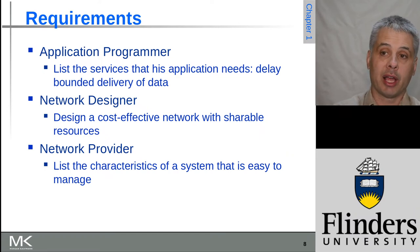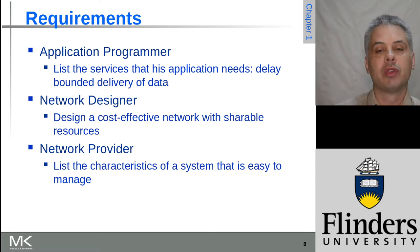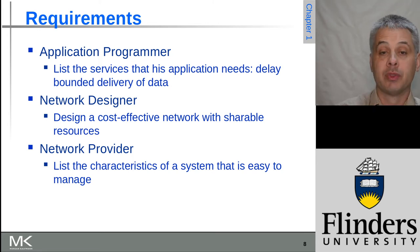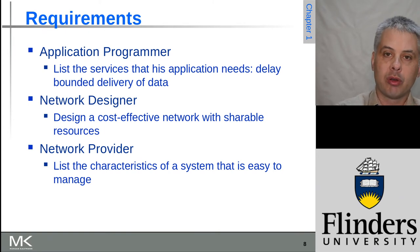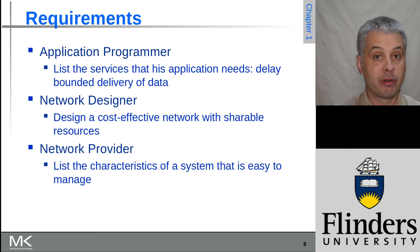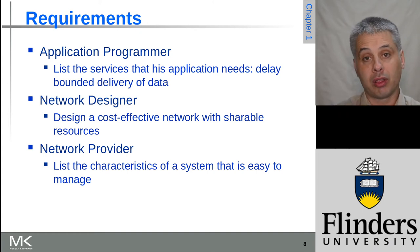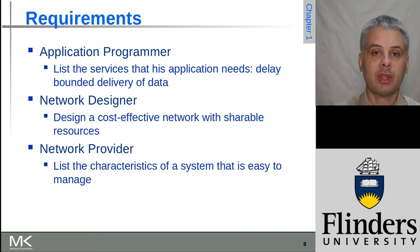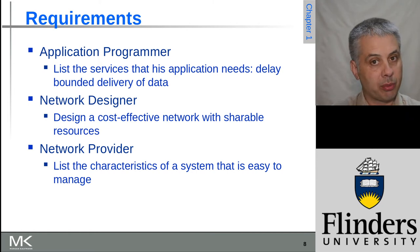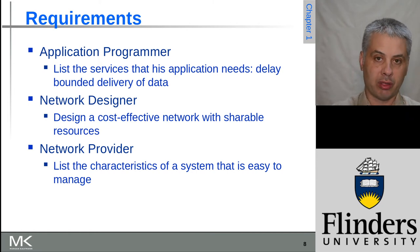So those are some of the roles of the application programmer — and of course they need to write the thing at the end — but we're talking about the design process. The network designer then needs to take those requirements from the application programmer and think about what is the most cost-effective network they could create that will satisfy those requirements. They're taking the needs of the application programmer and turning those into specifications for what a network might look like.